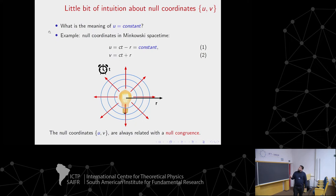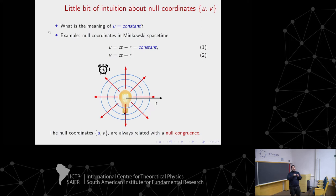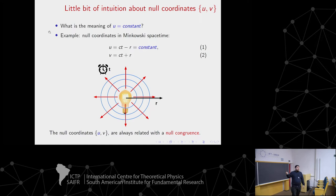Here we have the outgoing null coordinate and here the ingoing null coordinate. Let's look at equation one and try to understand what U equal to constant means. Here we have the speed of light multiplied by T minus R. The only way this will be constant is if we move along a light ray, because light travels at the speed of light. So we can choose one light ray where equation one is satisfied. In fact, we can choose a set of light rays where equation one is satisfied.